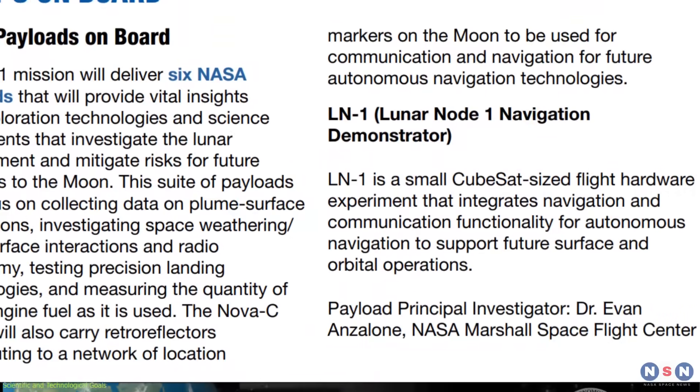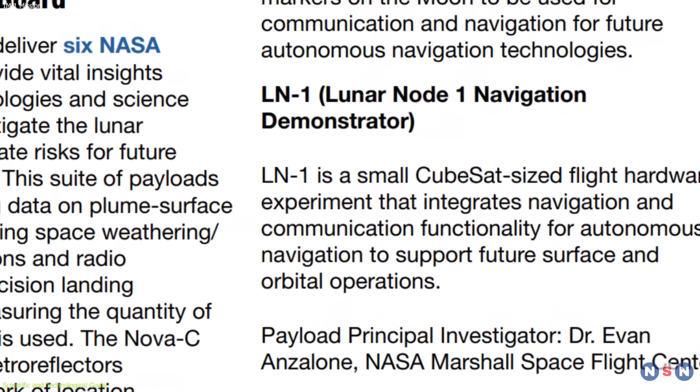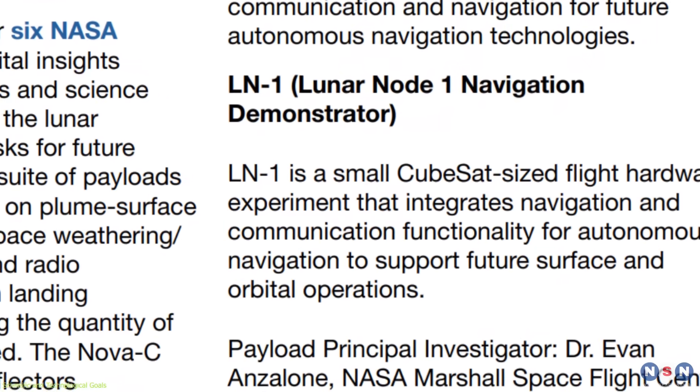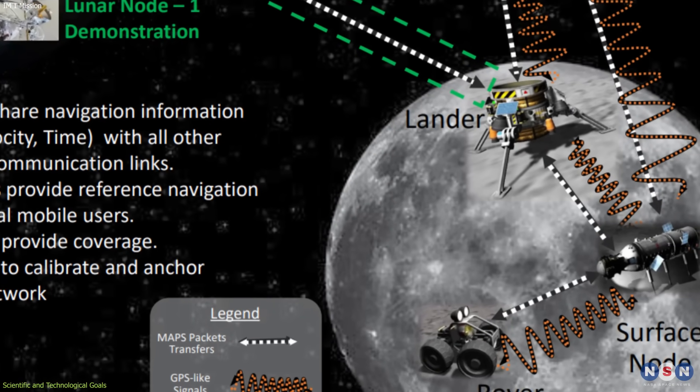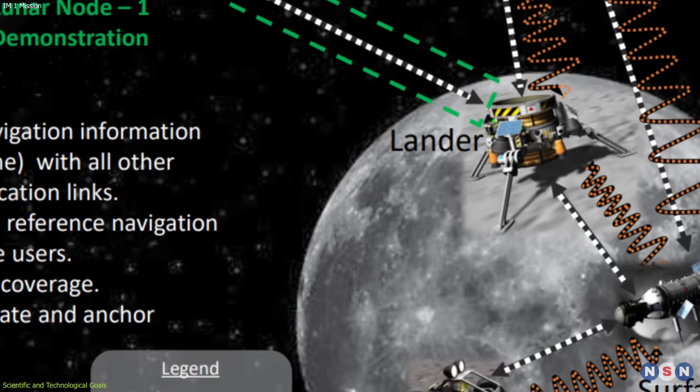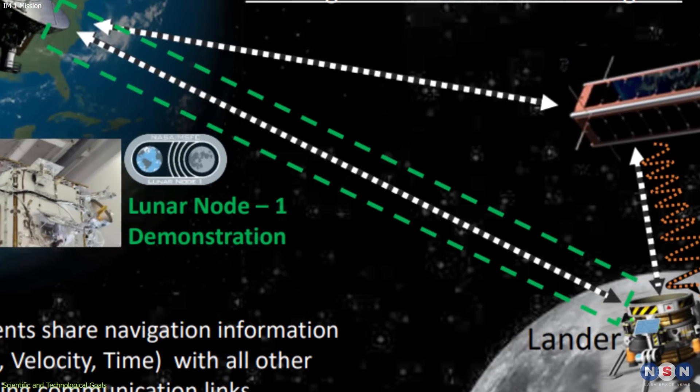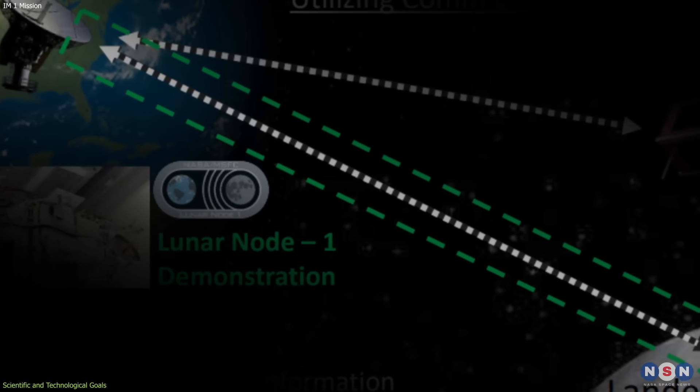The six NASA payloads that the document mentions are: The first payload is LN-1, or Lunar Node 1 Navigation Demonstrator, a communication and navigation node that will enable autonomous navigation for future landers and rovers. It will use a software-defined radio to transmit and receive signals from Earth and other spacecraft, and it will also use a laser retroreflector to measure the distance and position of the lander.